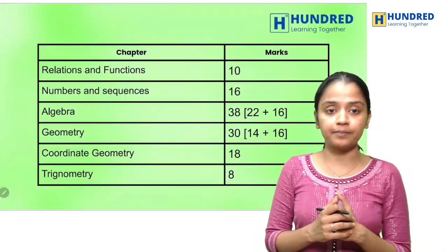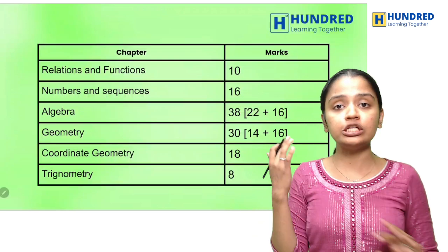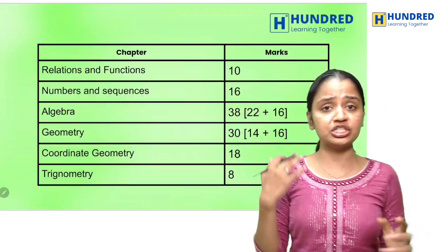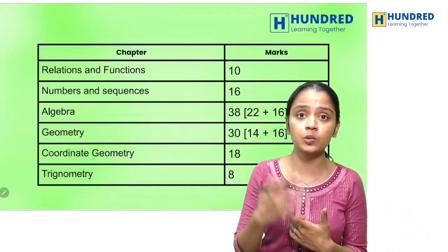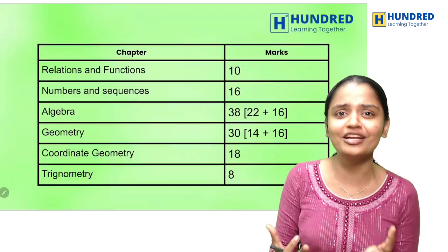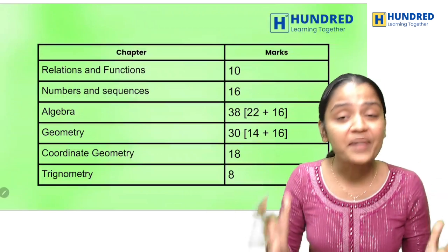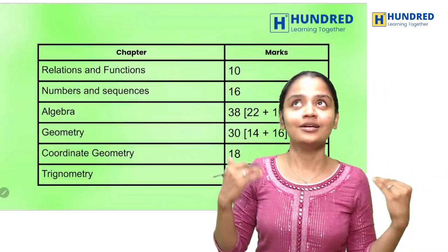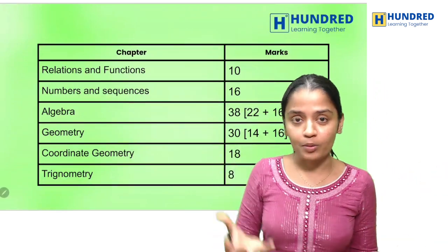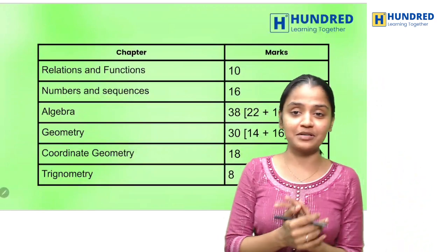We have 8 chapters: Relations and Functions, Numbers and Sequence, Algebra, Geometry, Coordinate Geometry, Trigonometry, Mensuration, and Probability. So there are 8 chapters in total.